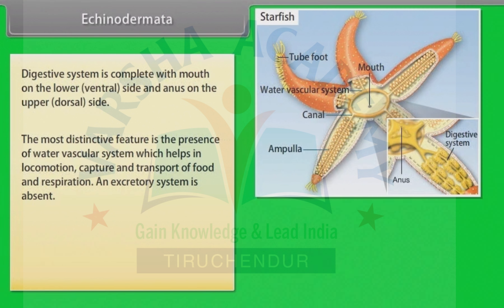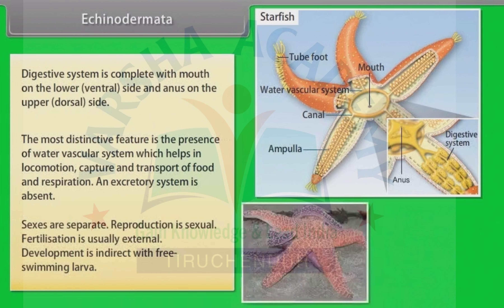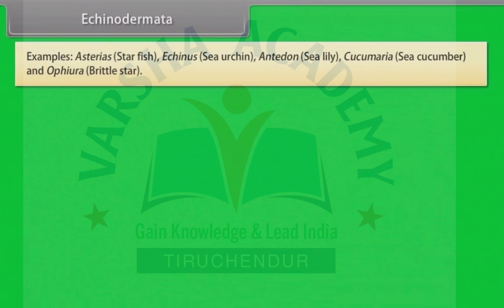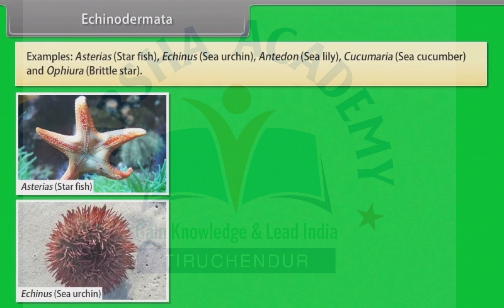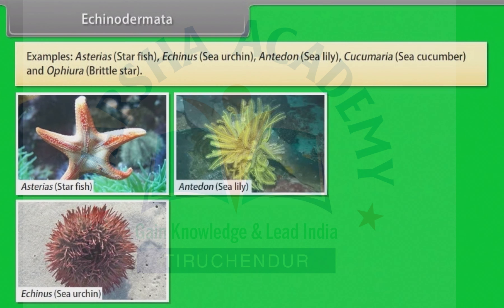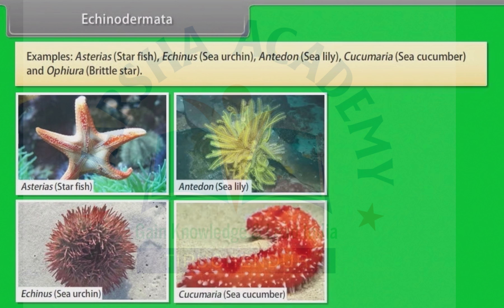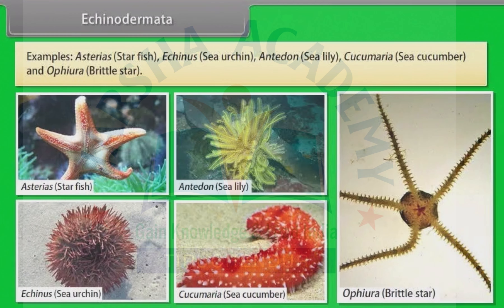An excretory system is absent. Sexes are separate. Reproduction is sexual. Fertilization is usually external. Development is indirect with free-swimming larvae. Examples: Asterias, that is starfish; Echinus, that is sea urchin; Antedon, sea lily; Cucumaria, sea cucumber; and Ophiura, brittle star.